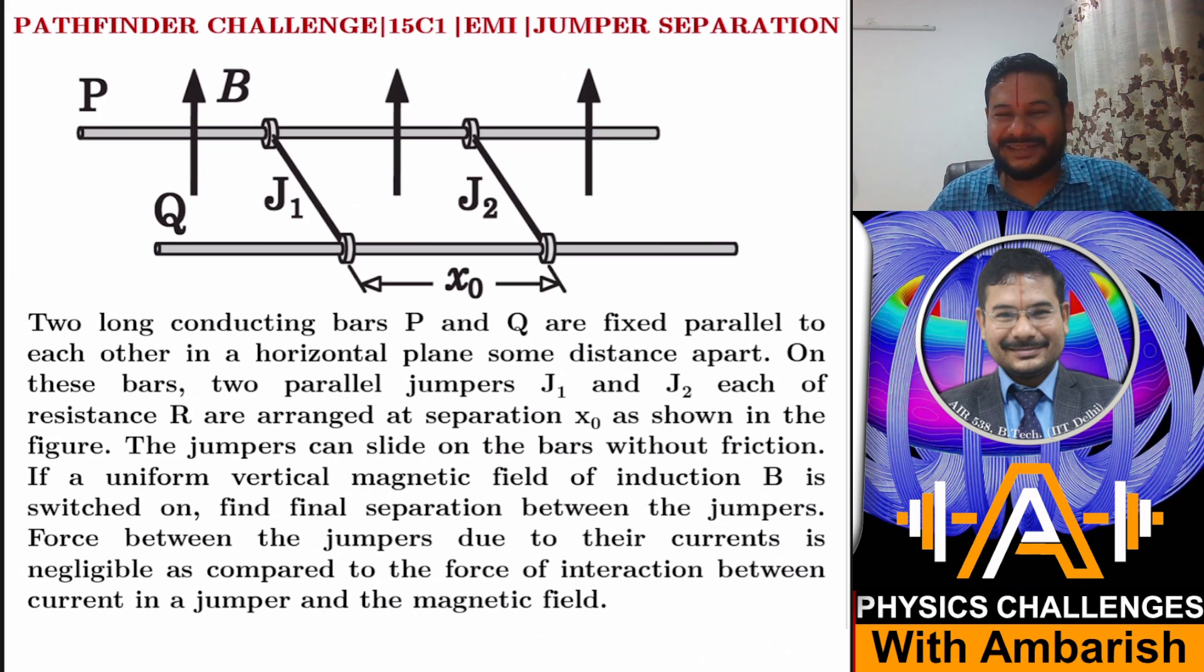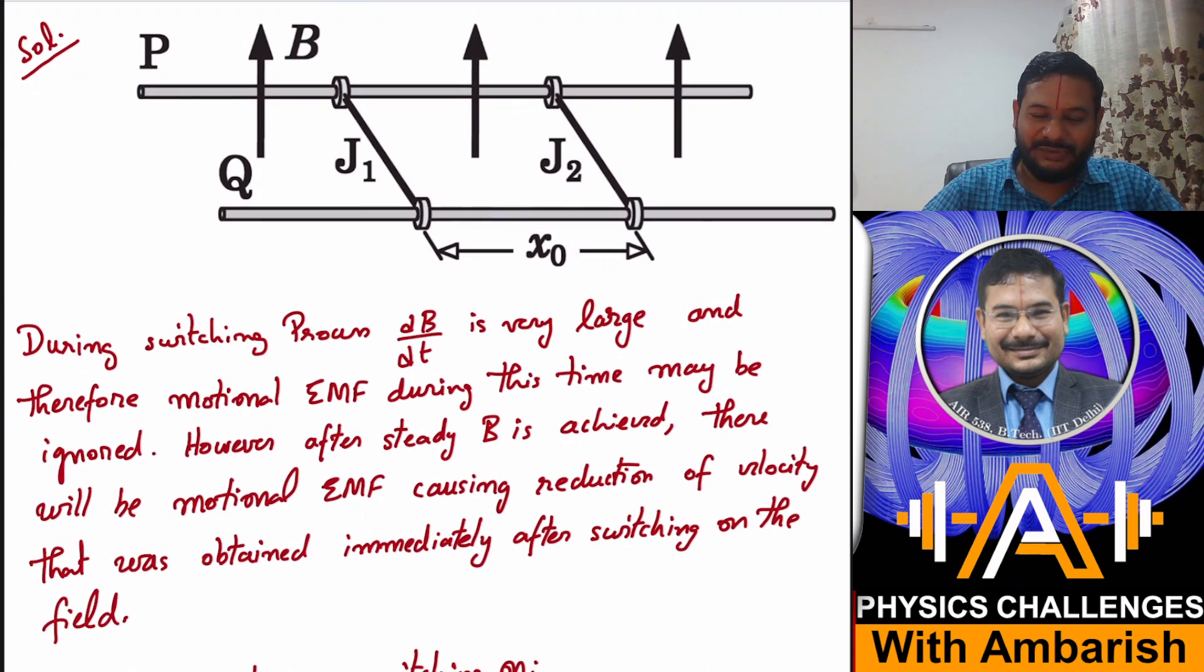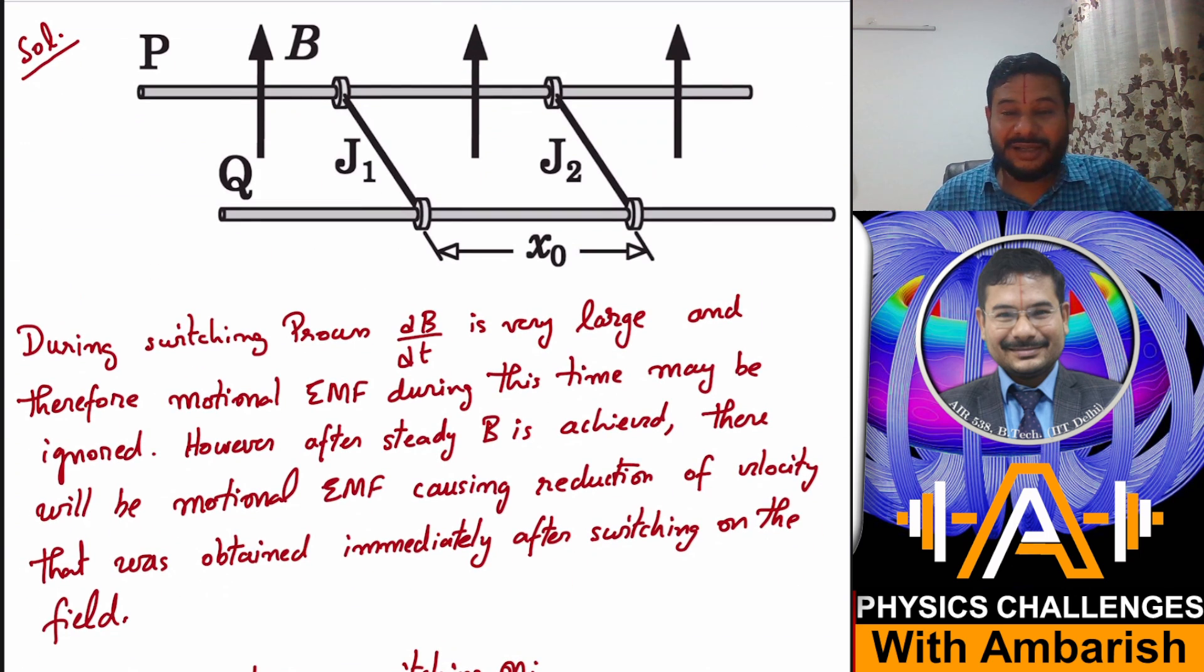Let me get into my analysis right away. What's the concept here? When you're switching on the magnetic field, the term 'switching on' means that it's happening very fast, that means dB/dt is tending to infinity.